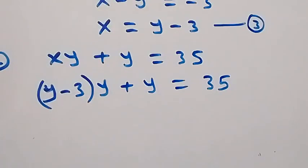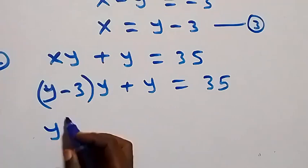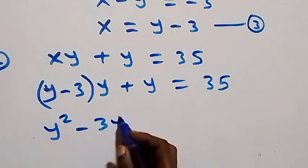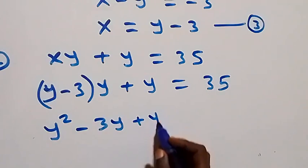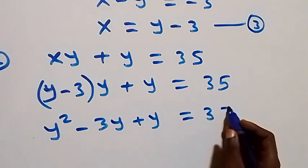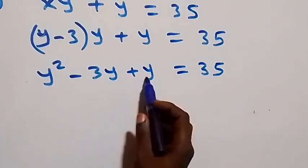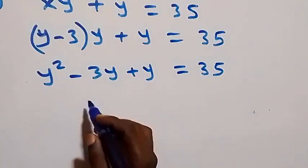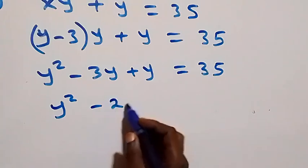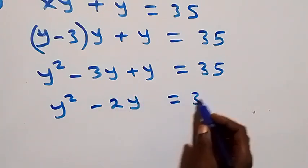Expanding the bracket: y squared minus three y plus y plus y equals 35. Combining like terms, negative three y plus y is negative two y, so we have y squared minus two y equals 35.